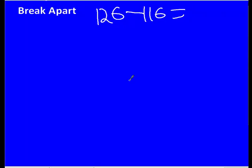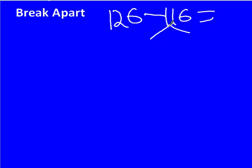This is an equation to show you how to do it. Our equation is 126 minus 116 equals. Break apart the 116 into a 110 and 6 like this because it makes it easier to solve.